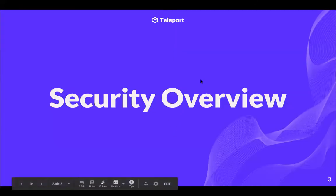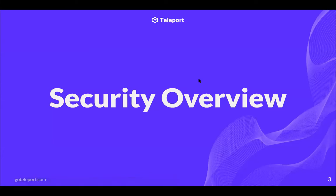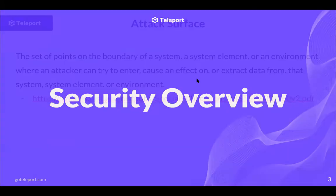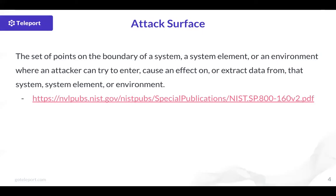In this section, I'll define a few key security concepts so that we have a common set of definitions to work from. The first is an attack surface. According to NIST, an attack surface is the set of points on the boundary of a system, a system element, or an environment where an attacker can try to enter, cause an effect on, or extract data from that system or environment. In other words, an attack surface describes all of the vectors for exploitation.